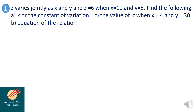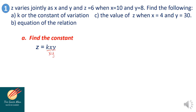Let's apply joint variation in this problem. Z varies jointly as x and y, and z is equal to 8 when x is equal to 10 and y is equal to 8. Find: the constant, the equation of the relation, and the value of z when x is equal to 4 and y is equal to 30. Starting with the constant: z is equal to k times x times y, so divide both sides by x times y. The constant k is equal to z all over x times y.